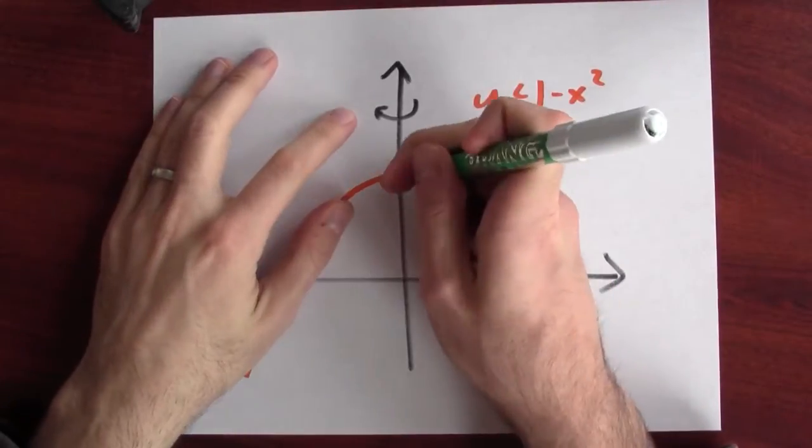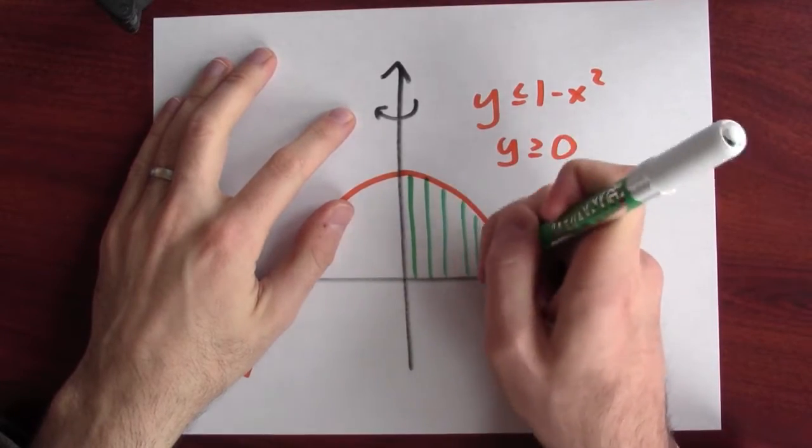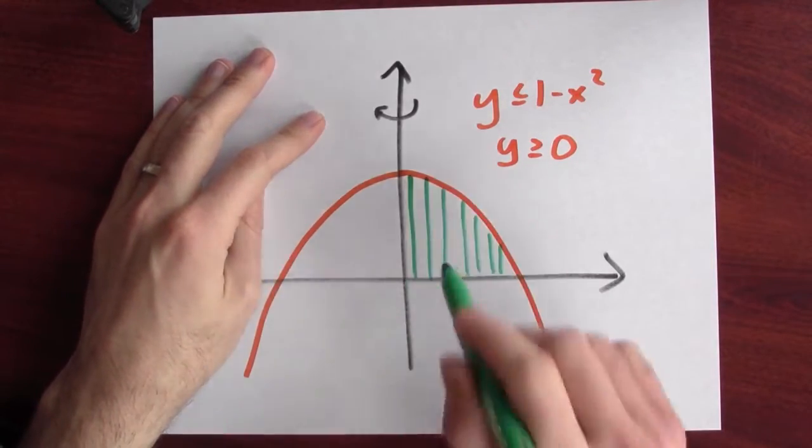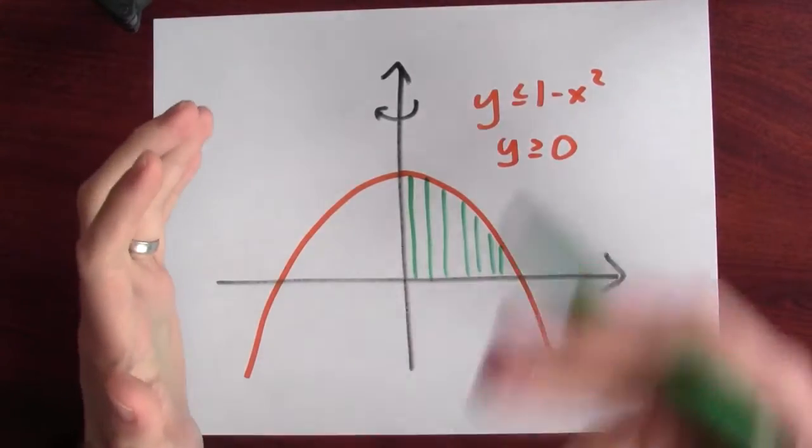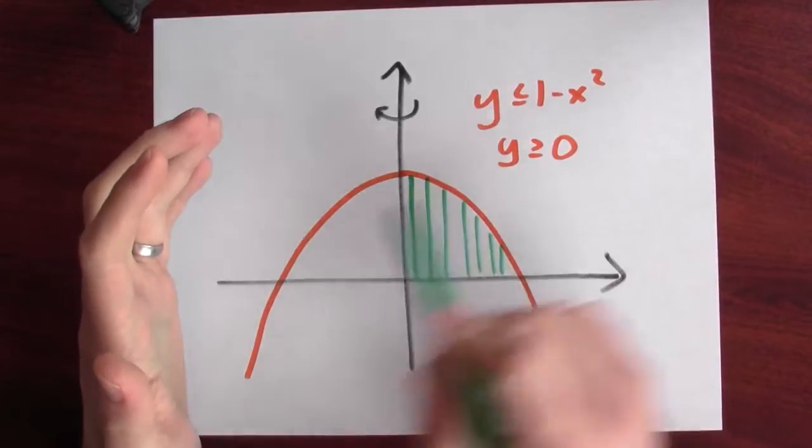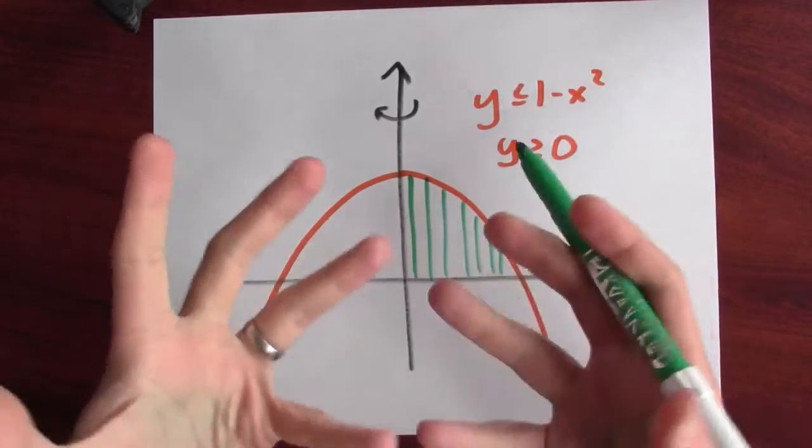But let's try it with shells. In this case, I'll cut it up into vertical slices. And I'll rotate these vertical slices around the y-axis to produce shells. And I'll integrate the volumes of those shells to give me the volume of the whole solid of revolution.